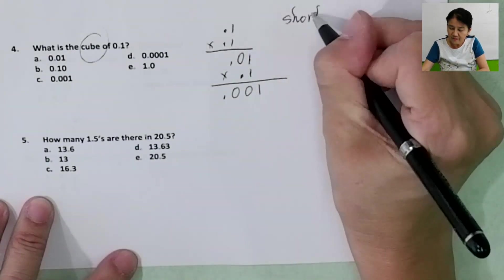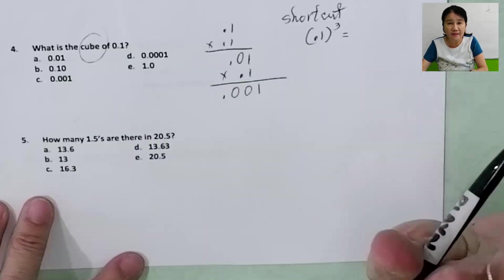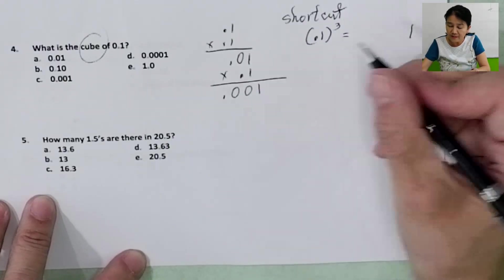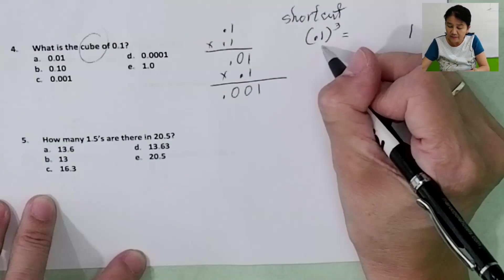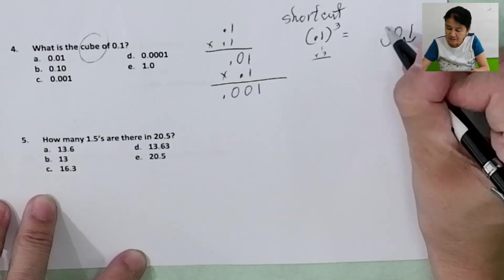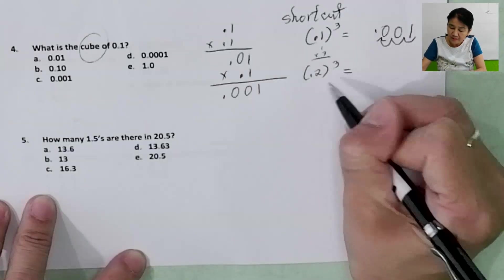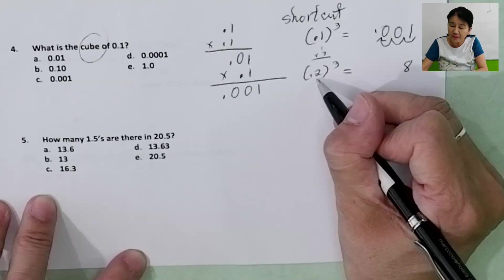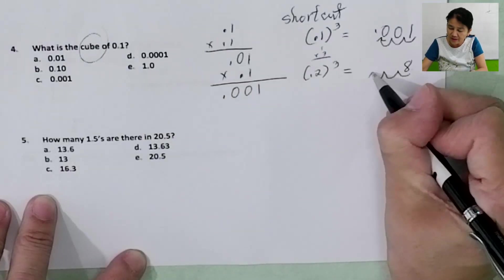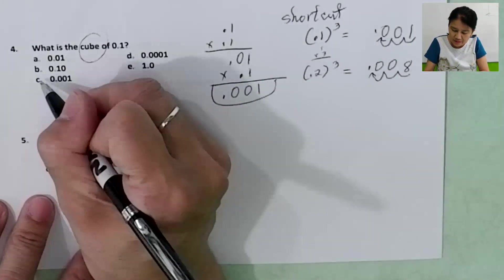Shortcut for cubing a decimal: take 0.1 cubed — multiply the digit three times: 1 times 1 times 1 is 1. Count the decimal places: 1, then multiply by 3 to get 3 decimal places. So 1, 2, 3 — the answer is 0.001. Another example: 0.2 cubed. 2 times 2 times 2 is 8. One decimal place times 3 equals 3 decimal places: 0.008.